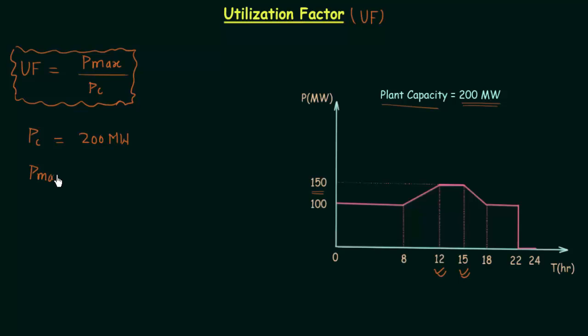So P maximum is equal to 150 megawatts and now we will find out the ratio which will give us the utilization factor. So 150 megawatts over 200 megawatts. The unit will be nothing because it is a factor. Megawatt megawatt will cancel out and when you solve it you will get 0.75.